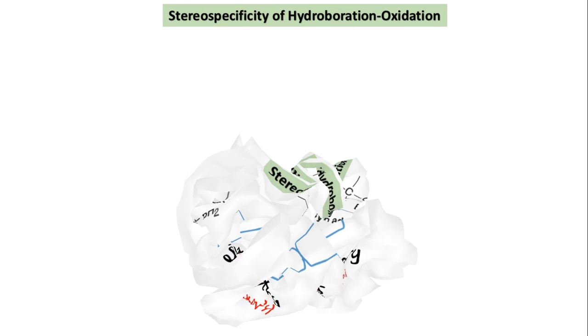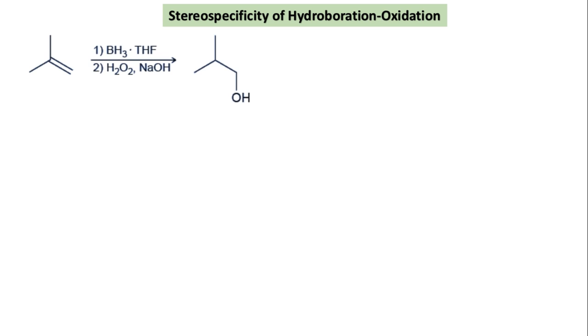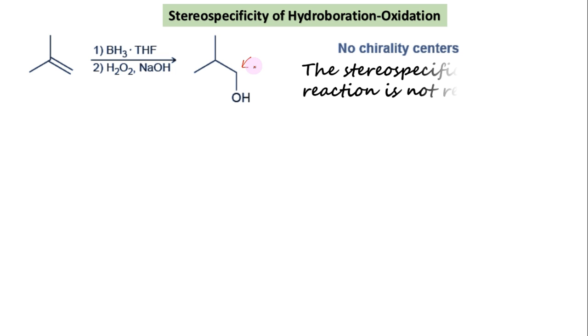When drawing the products of hydroboration-oxidation, it is essential to consider the number of chirality centers which are created during the process of addition. If no chirality centers are formed, just like in this product, then regardless of the way BH3 is added to the alkene — that is, from the top or bottom face — only one product is formed, rather than a pair of enantiomers. Therefore in this case, syn addition does take place from two faces equally, but its outcome is the same. Thus stereospecificity of such a reaction is not relevant.